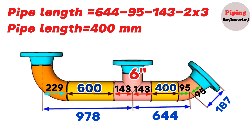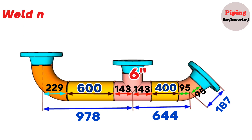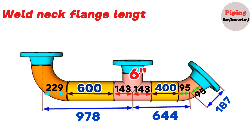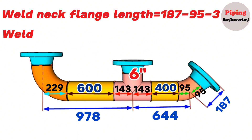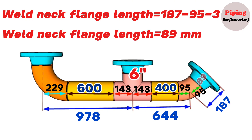From the total length of 187 millimeters, subtracting the 45-degree elbow length and the 3-millimeter gap, we can easily calculate the 6-inch weld neck flange length. The weld neck flange length equals the total length 187, minus 95, minus 3. We calculate and find that the 6-inch weld neck flange length equals 89 millimeters.